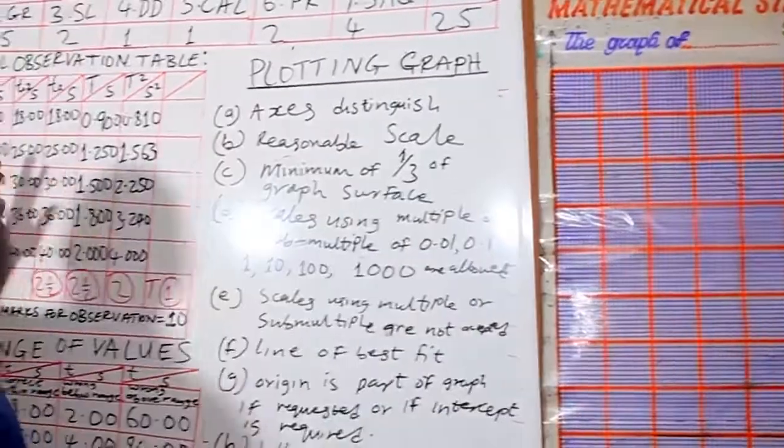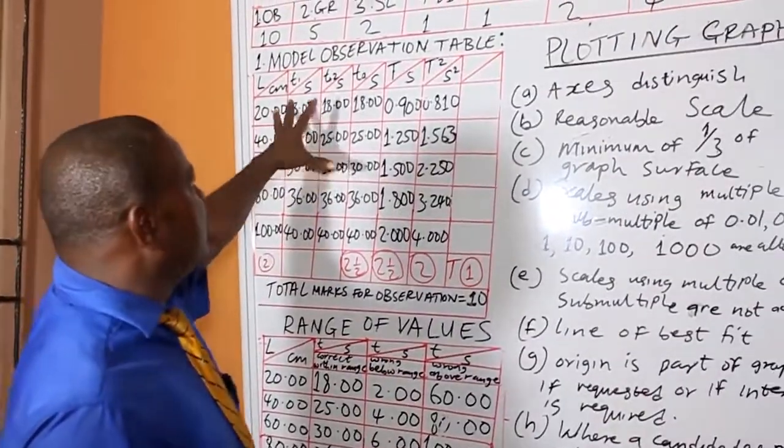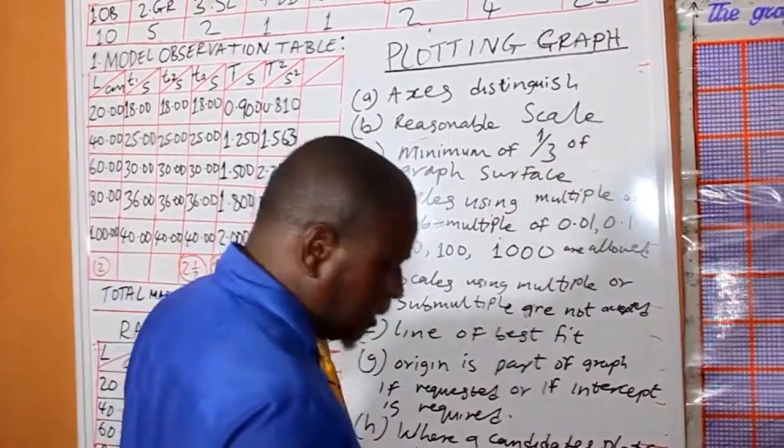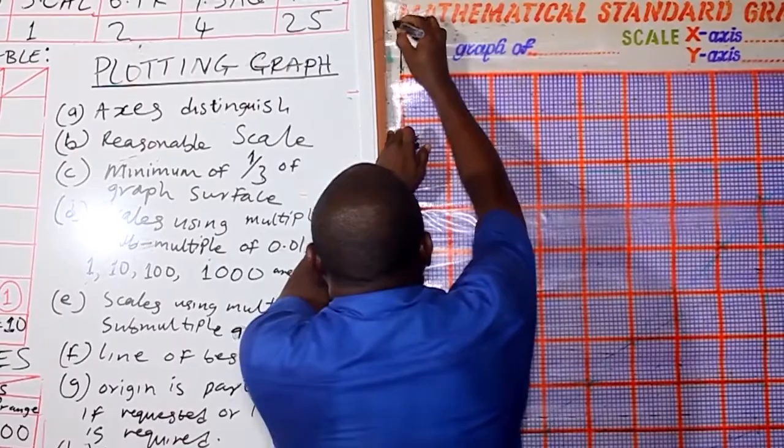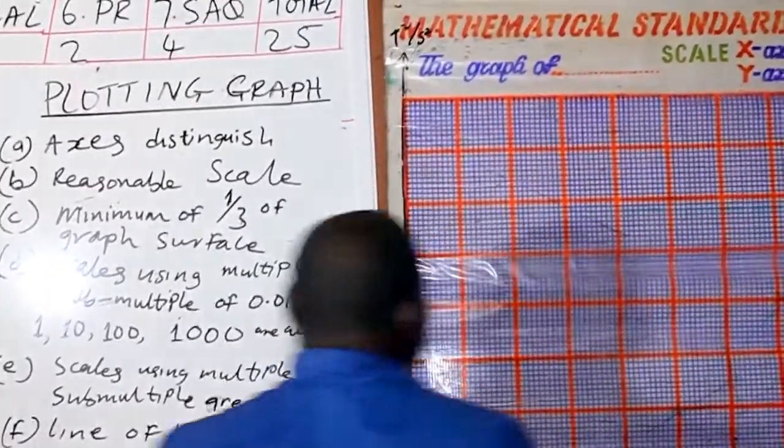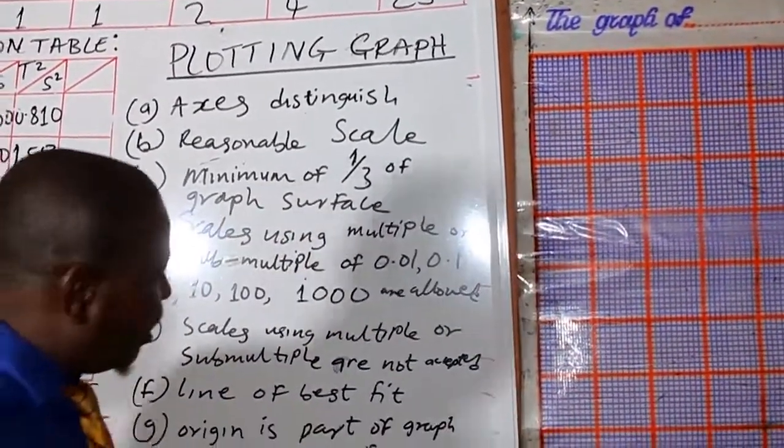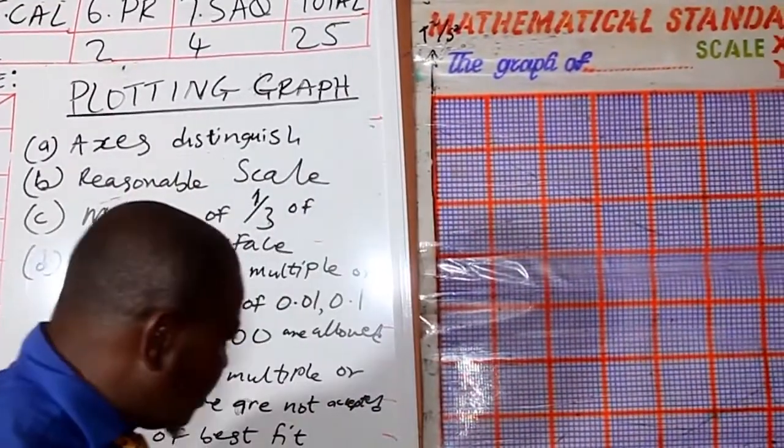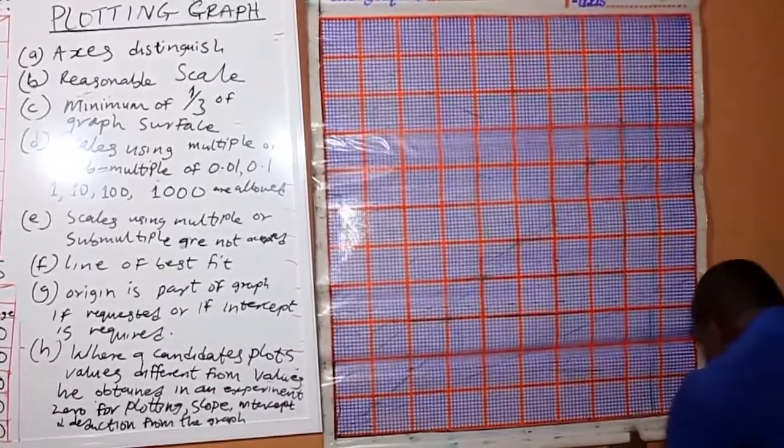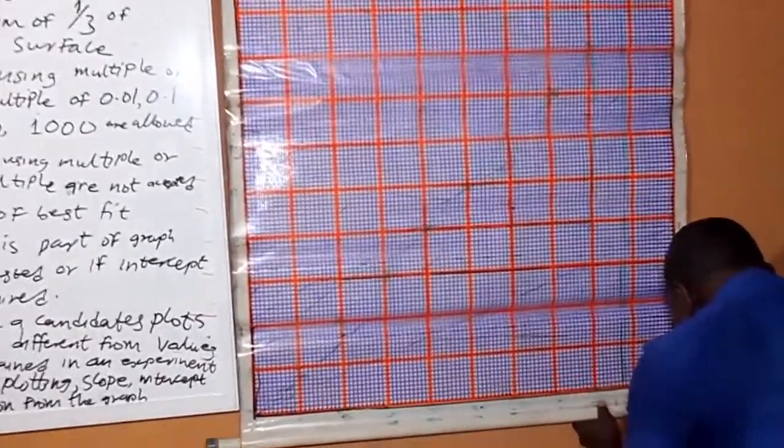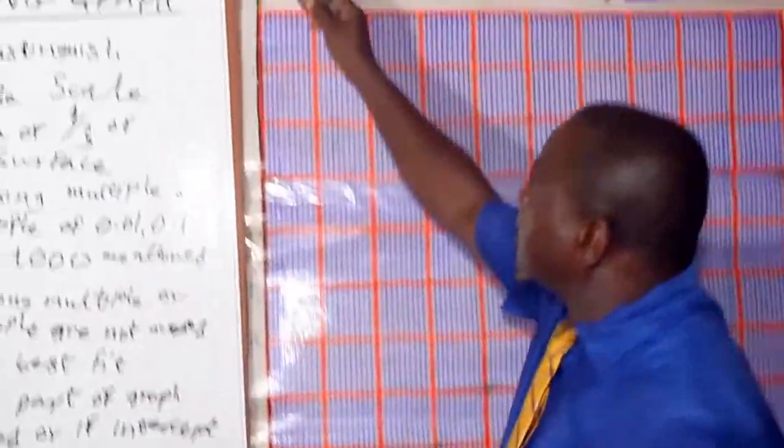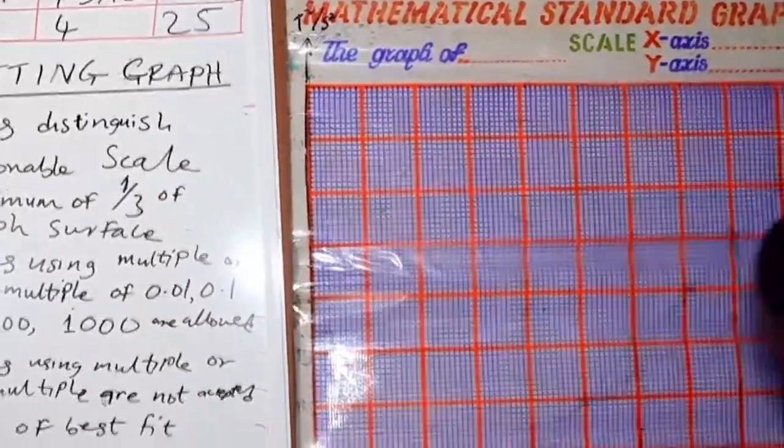Making use of the values in the Model Observation Table, if you are directed to plot T squared against L, you will write T squared through the unit, that is the second square. This is the vertical axis. This is the horizontal axis. We are going to plot L through cm. This arrow means that it continues like that. The same thing with this arrow.